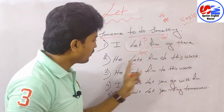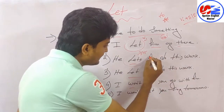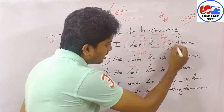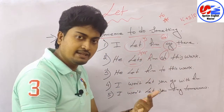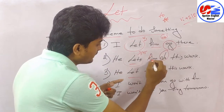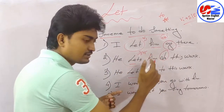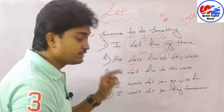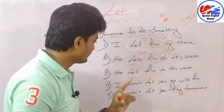So: 'I'll let him go there' or 'He'll let him do this work.' After LET, we have the object — him, her, or any name — and after that we must use a bare verb (V1) without 'to.' 'To' is not used here. This is the rule.